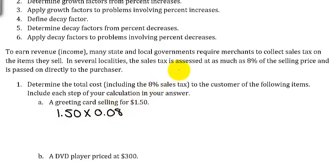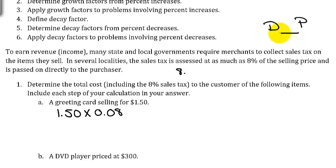Remember from a previous section, we went over how to convert a percent to a decimal. If you write a D and a P on your paper and move from percent to decimal, you move the decimal point two positions to the left. The decimal point is at the end of the 8, and moving it two places — you need one placeholder zero — so that would be 0.08.